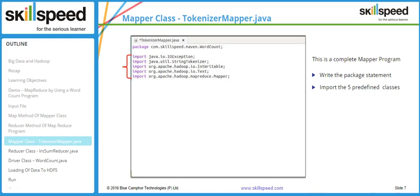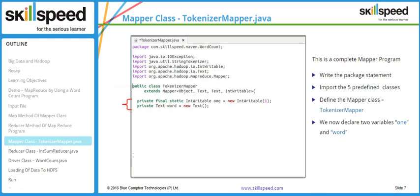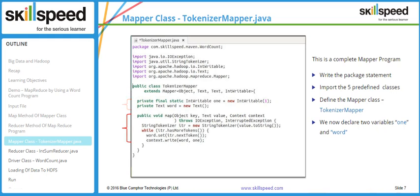The remaining imports are IntWritable, used for integers; Text, a wrapper for the standard string data type; and the Mapper class itself. Arrow number three shows the TokenizerMapper class, which extends the Mapper class. Arrow number four declares two variables: 'one' of IntWritable type, and 'word' of Text type.